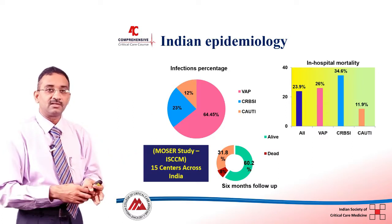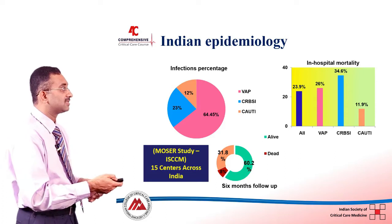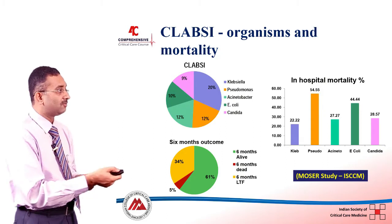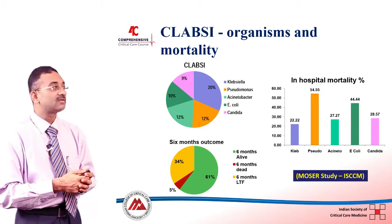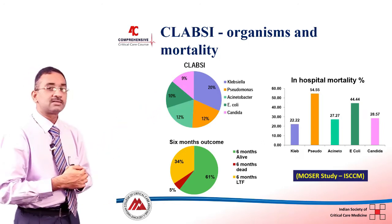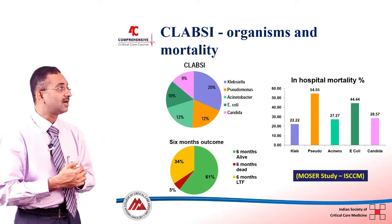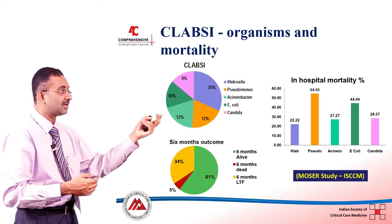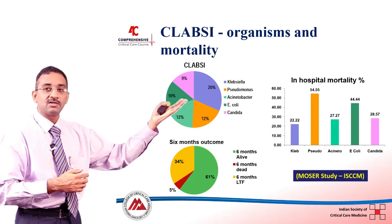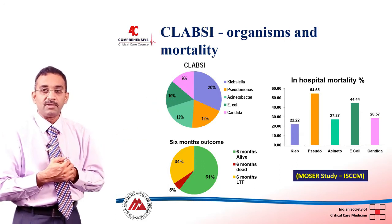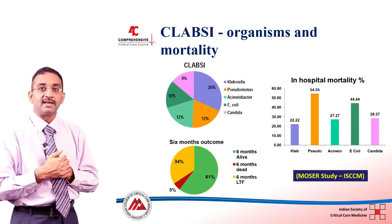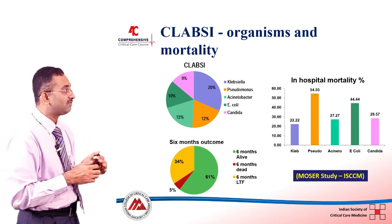What are the common organisms causing CRBSI in our country? From the Moses study sponsored by the Indian Society of Critical Care Medicine, the number one bug is probably Klebsiella, followed by Pseudomonas and Acinetobacter. An important point to note is that gram positives form a very small proportion of the organisms causing catheter-related bloodstream infections.